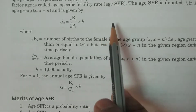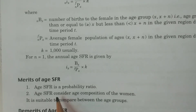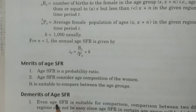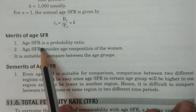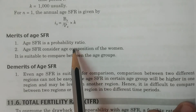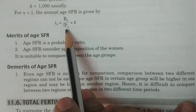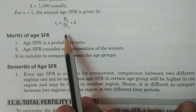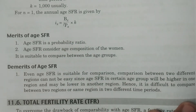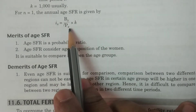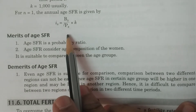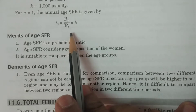Now, merits and demerits of age specific fertility rate, age SFR. What are the merits? Age SFR is a probability ratio because in the denominator we have considered NFPX or FPX, which is the female population. Since births are produced from the female population, it is therefore a probability ratio.